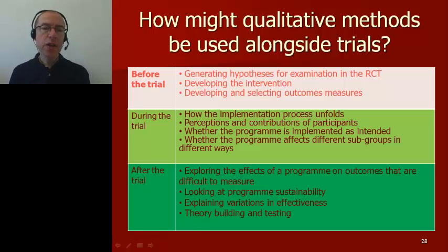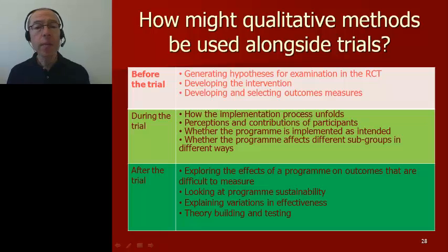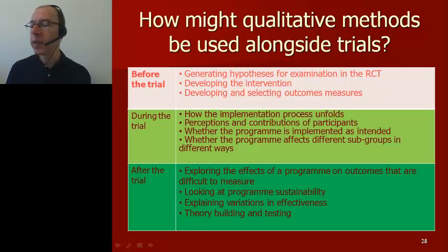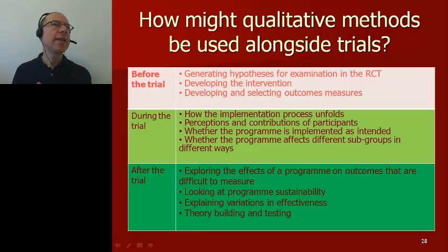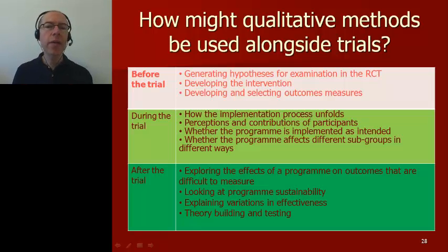Before a trial, there are at least three ways in which qualitative methods can be used. They may be helpful in identifying new opportunities and hypotheses for intervention — for example, qualitative work may suggest that peer support is helpful in maintaining medication adherence in people with chronic diseases such as diabetes or hypertension, which could form the basis for developing peer support interventions delivered through family members or community health workers.